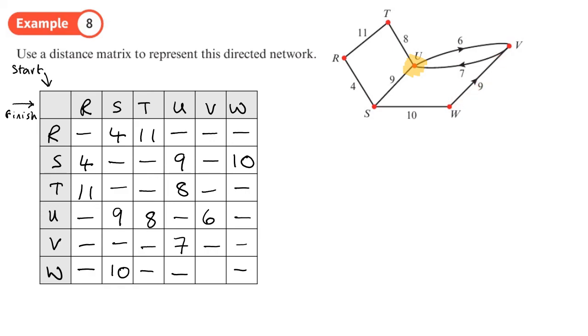Whereas if I go from W to V, I can go that way. And there's a line there. You should now be able to do exercise 2D on pages 42 to 43.